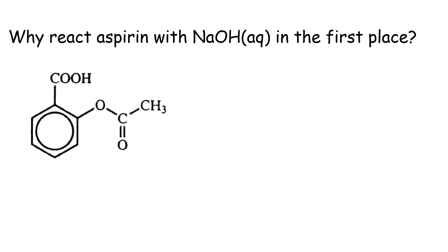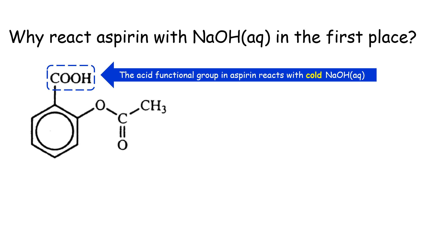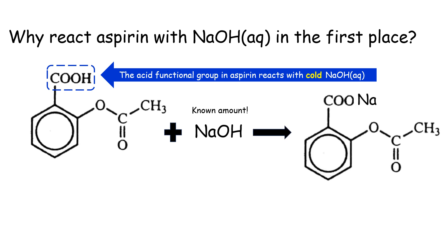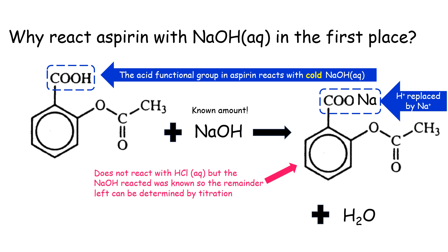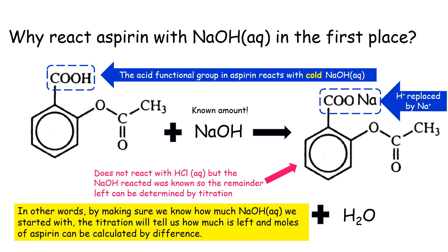The reason we use sodium hydroxide is that the acid functional group in aspirin reacts with cold sodium hydroxide solution to form a salt — the hydrogen ion is replaced by a sodium ion. This salt doesn't react with HCl, but the sodium hydroxide that reacted is known. So whatever sodium hydroxide is left behind can be determined by titration. By knowing how much sodium hydroxide we started with, the titration tells us how much remains, and the moles of aspirin can then be calculated by difference.